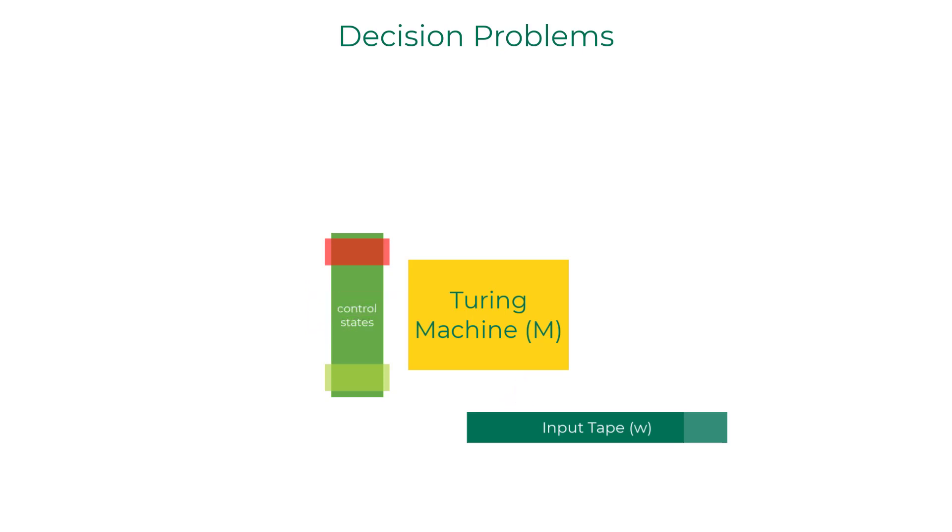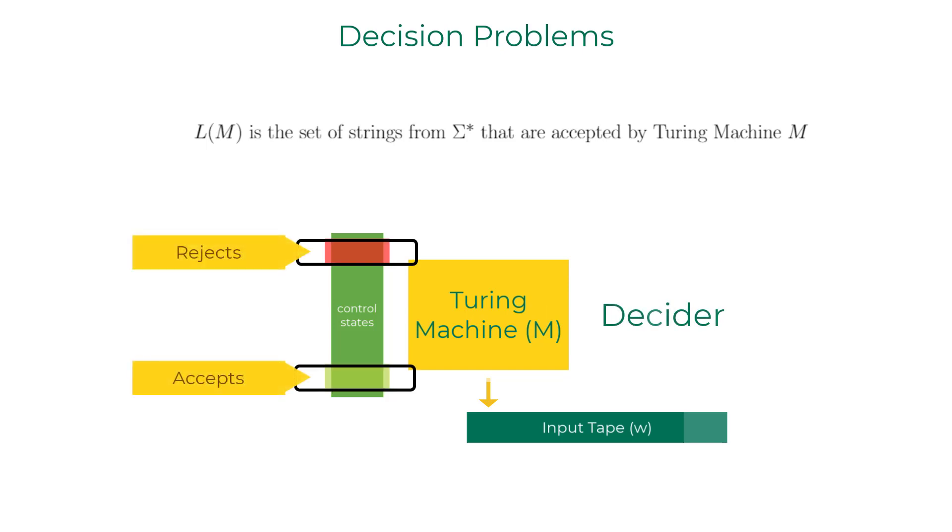The language of the Turing machine is the set of strings for which the Turing machine ends up in an accept state. If a Turing machine is a decider, then all the strings in sigma star either end up in the accept or a reject state, and the language of the Turing machine is called a decidable language.